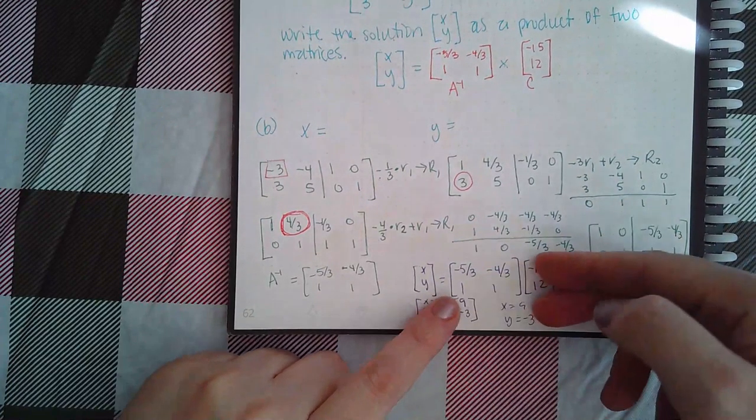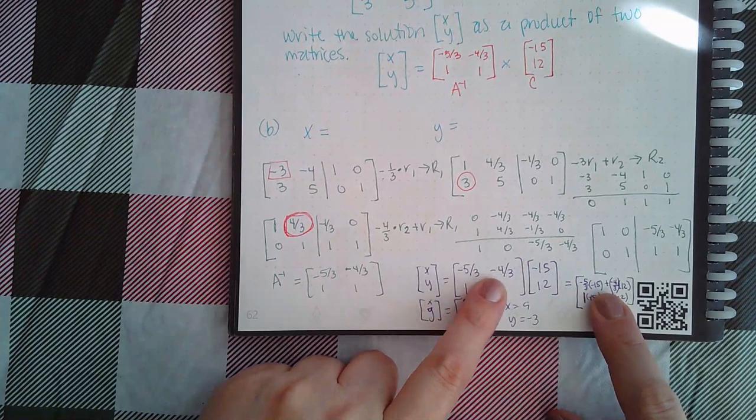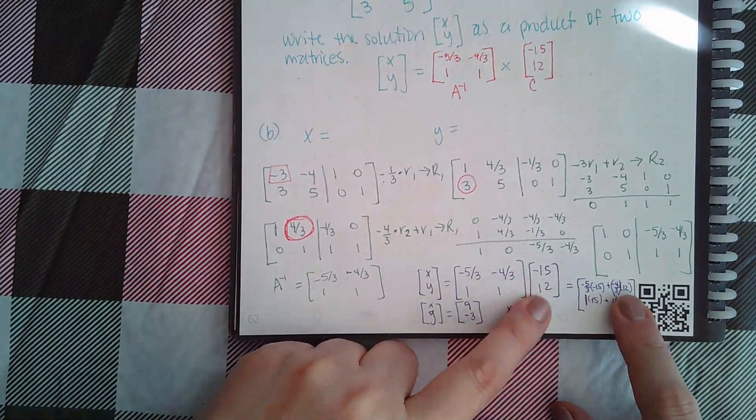So this row times this one column means negative five over three times negative 15 plus negative four over three times 12.